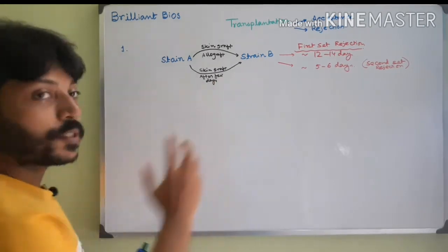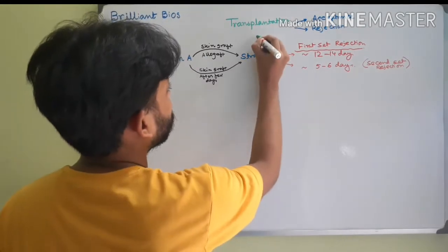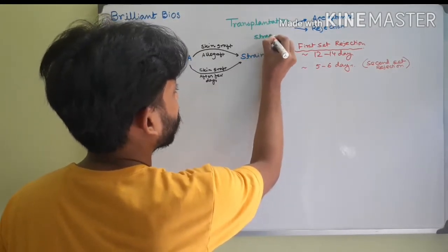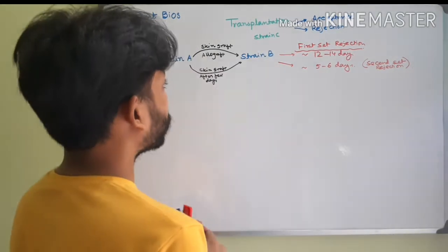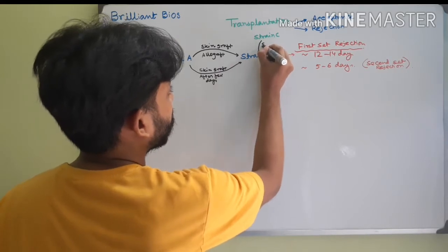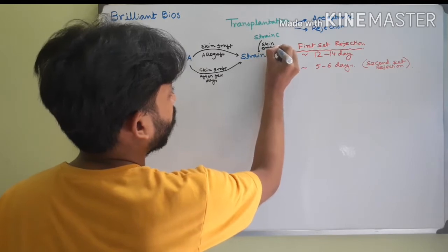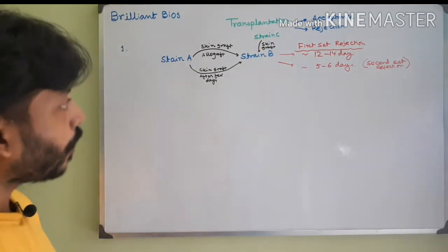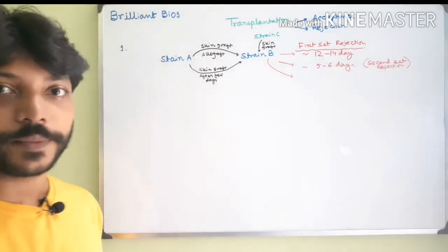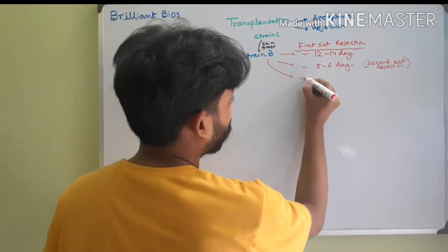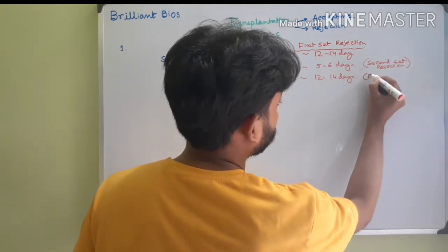They then performed a control experiment using strain C mice. They grafted skin from strain C mice to strain B mice and found that the strain B mice rejected the graft in approximately 12 to 14 days — showing first set rejection. This confirmed that the memory generated was specific to strain A.